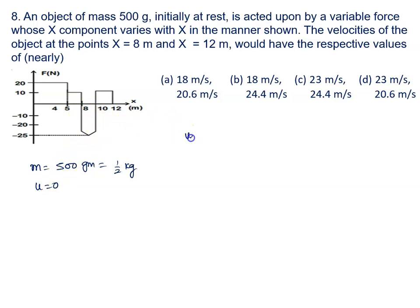We all know very well work done by external force equals change in kinetic energy, which is final KE minus initial KE. Initially at rest, the initial kinetic energy is zero. Work done is given by area under the graph, so (1/2)mv² equals the work done, which is the area under the force-displacement graph.